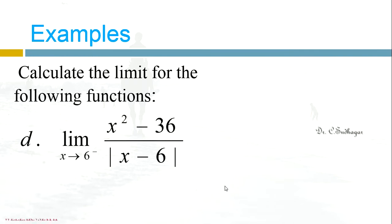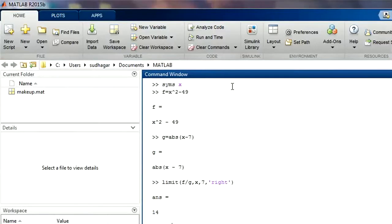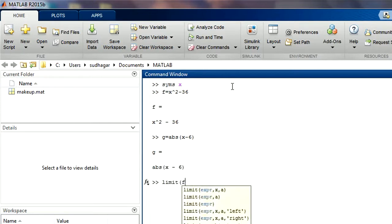Let us see this example. Now this example is 6 minus, that is the left limit. So give the f value, g value. Modulus of x minus 6 will be abs, that means absolute value of x minus 6. Limit at the point 6, it is a left limit. So this is the answer.